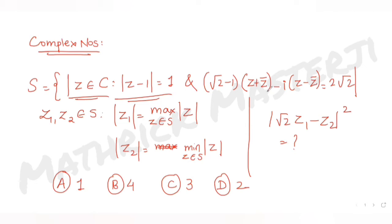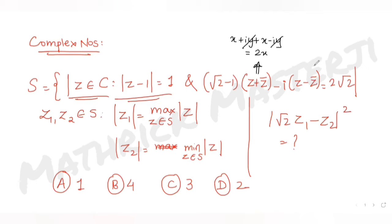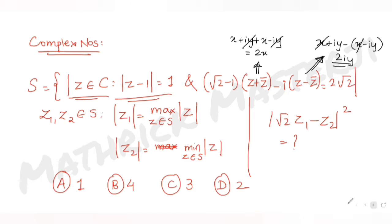For the second condition, let's first find z + z̄ and z - z̄. Since z = x + iy and z̄ = x - iy, adding gives z + z̄ = 2x. Subtracting gives z - z̄ = 2iy, so i(z - z̄) = i·2iy = 2i²y = -2y.